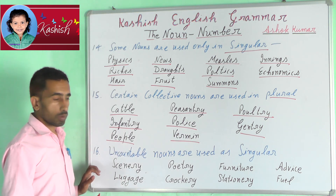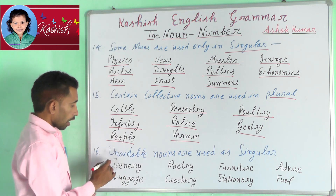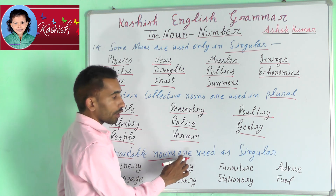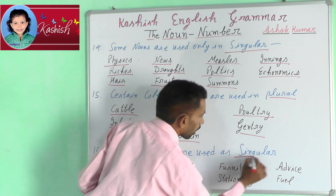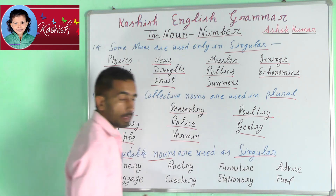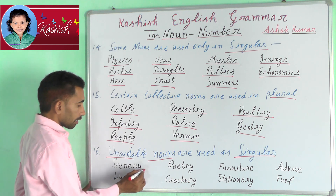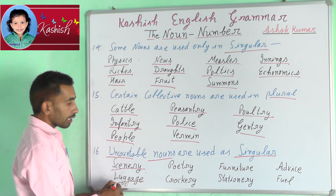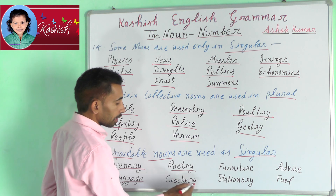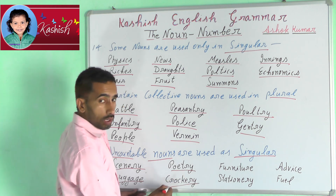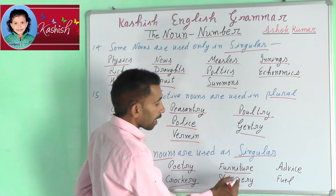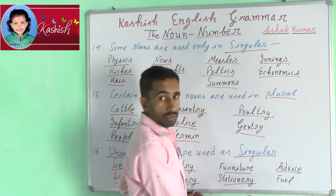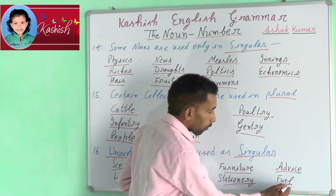Sixteenth rule: uncountable nouns are used in plural form but used as singular. For example: scenery, luggage, poetry, crockery, furniture, stationery, advice, fuel.